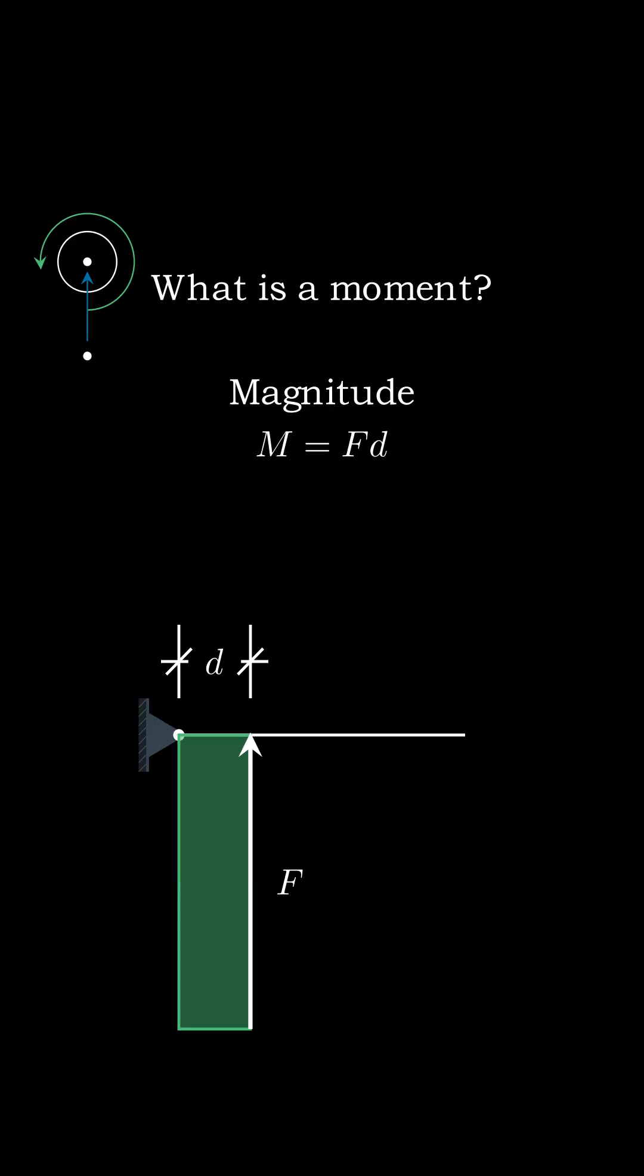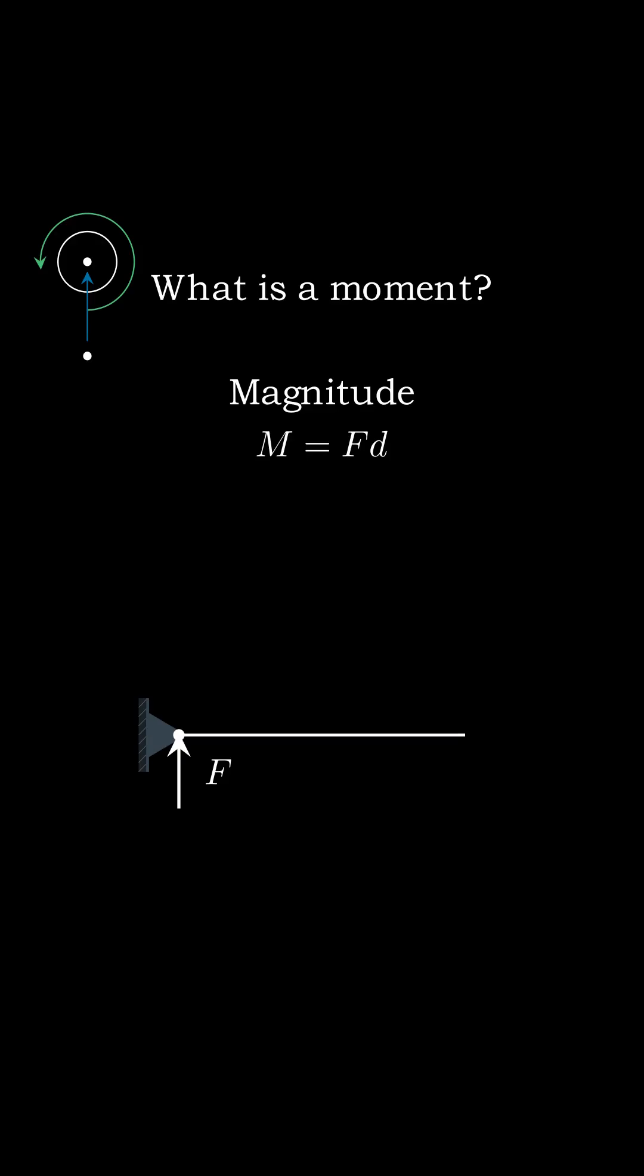If the force gets applied directly in line with the hinge, you can see that the area of this rectangle goes to zero, which means that the force stops creating a moment about the hinge.